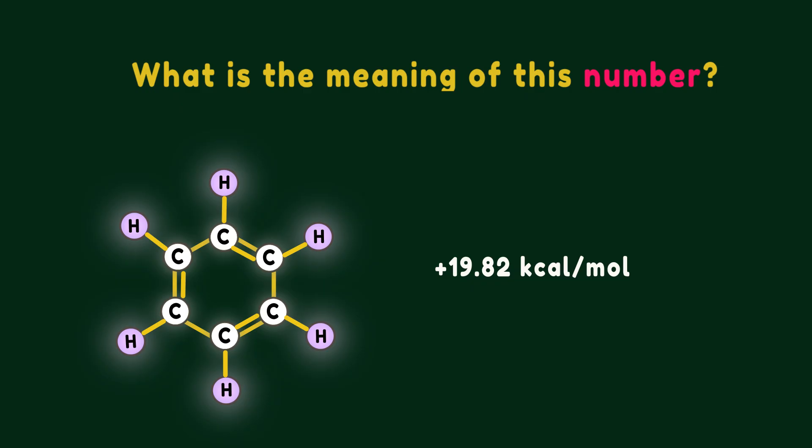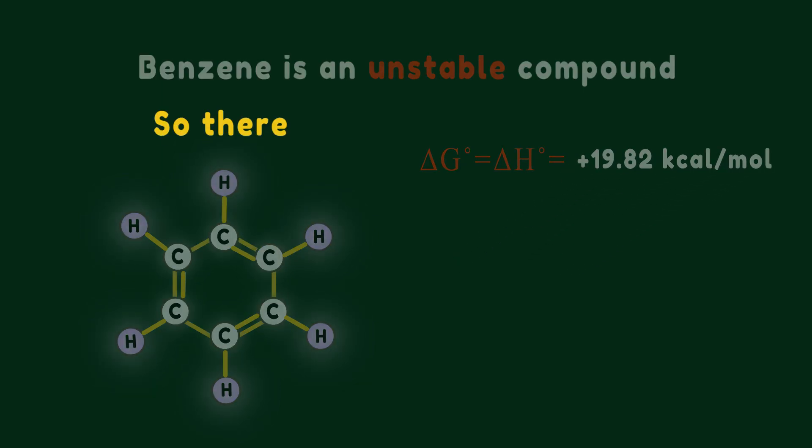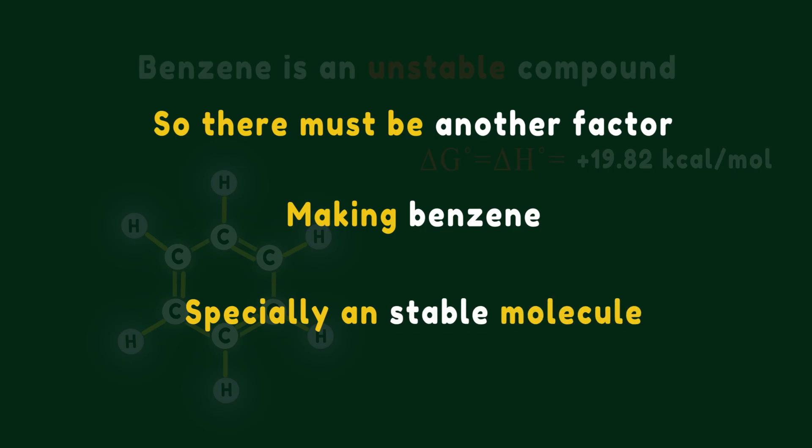Surprisingly, thermodynamics tells us that benzene is an unstable compound relative to its elements because the value of delta G is positive. So there must be another factor making benzene especially a stable molecule.